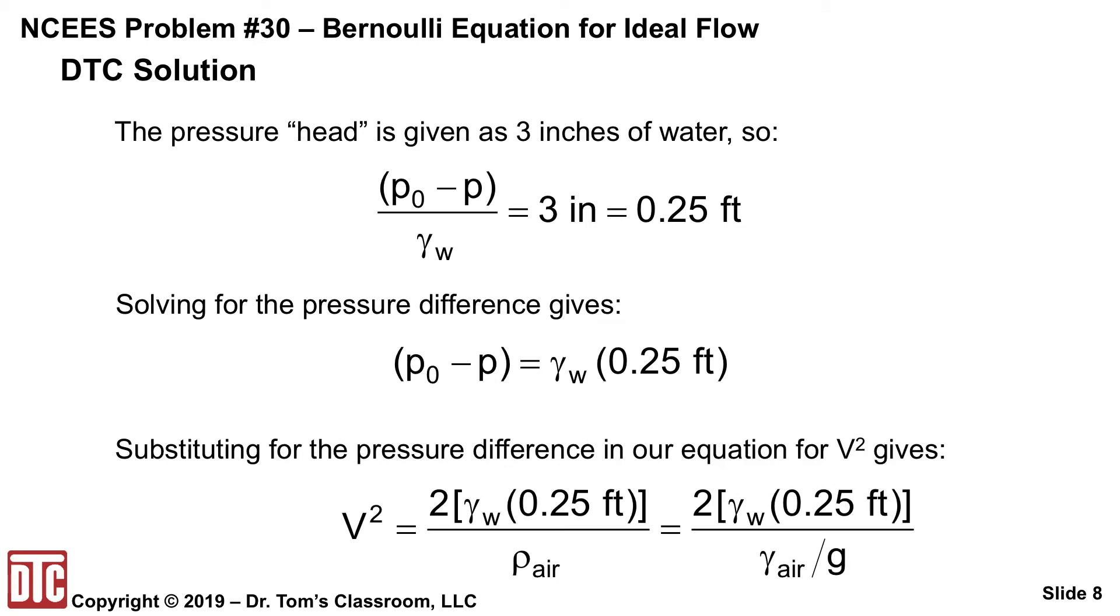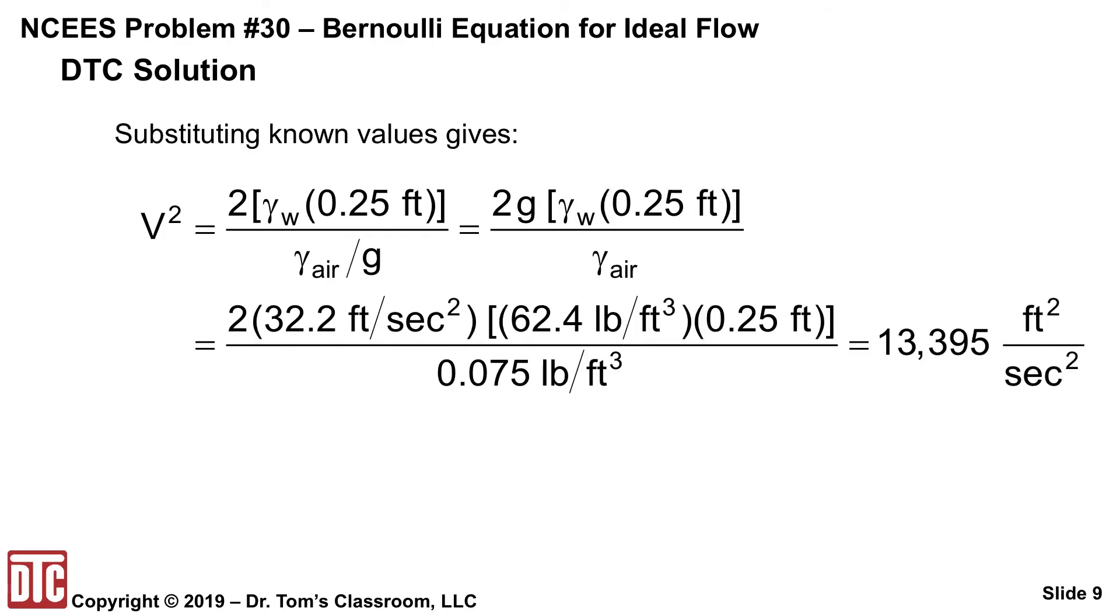If I substitute that into the equation we had, we have two times the difference in the pressure, so that's gamma of water times 0.25 feet, divided by the density of air. Well, the density of air is the specific weight divided by gravity. And the gamma of air is what we've been given, 0.075, not the density.